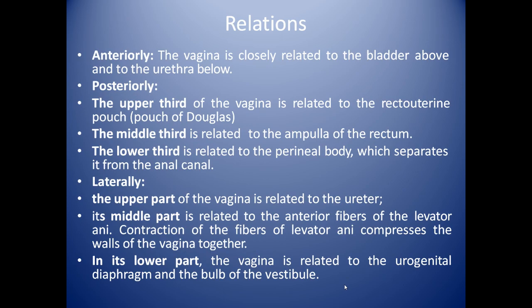Now we will see the relations of the vagina. Anteriorly, it is closely related to the bladder above and to the urethra below. Posteriorly, the upper third is related to the recto-uterine pouch, the middle third is related to the ampulla of the rectum, and the lower third is related to the perineal body, which separates it from the anal canal. Laterally, the upper part is related to the ureter, the middle part is related to the anterior fibers of the levator ani, whose contraction compresses the walls of the vagina together, and the lower part is related to the urogenital diaphragm and to the bulb of the vestibule.